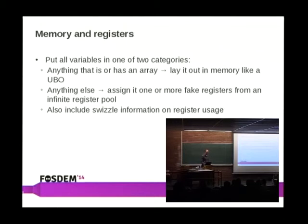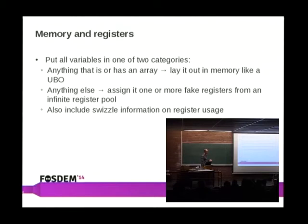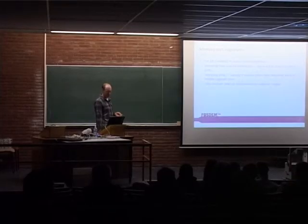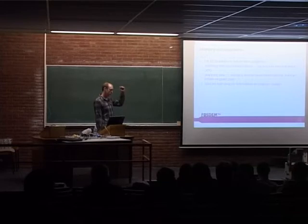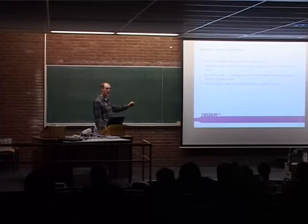We could also include swizzle information on the register usage. Even though we'd have this extra mapping — say, that register 238 is variable foo — it would end up being a lot smaller than the current IR dereference system. The biggest reason is there's one mapping per variable instead of an IR dereference for every time you use the variable. In addition, all compiler-generated temporaries — and we generate a pretty good number of those — none of those actually need IR variables anymore. You just say 'I need a temporary, it's the next fake register,' and you don't even need the mapping because that variable isn't visible to anything. And after the shader has been fully linked, you can throw away the map or reduce it to only things visible external to the shader, like shader inputs or uniforms.